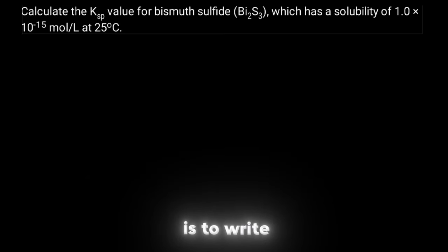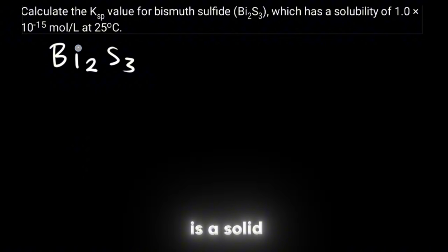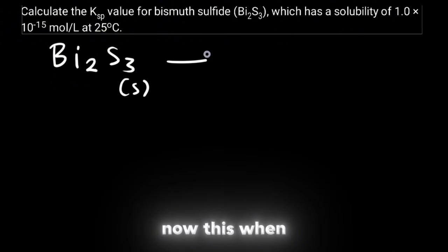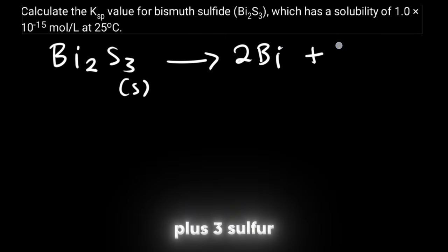The first thing is to write the equation. We have here bismuth sulfide which is a solid. Now this when you split this you will have two bismuth plus three sulfur.